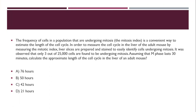The next question is numerical-based. The frequency of cells in a population undergoing mitosis is a convenient way to estimate the length of the cell cycle. To measure the cell cycle in the liver of an adult mouse using the mitotic index, liver slices were prepared and stained. It was observed that three out of 25,000 cells were found to be undergoing mitosis. Assuming that M phase lasts for 30 minutes, calculate the approximate length of the cell cycle in the liver of an adult mouse.